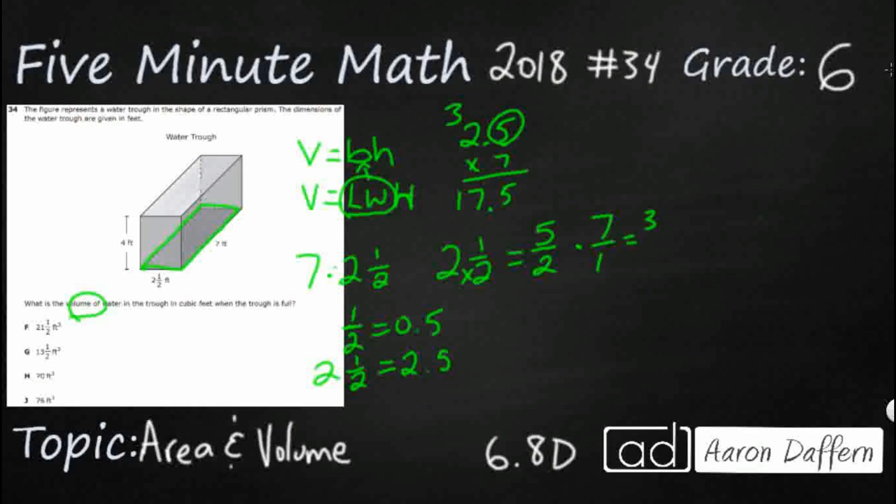You get 35 halves, but now that's an improper fraction. Now we're going to have to divide up, and you're going to get 17 and a half, or 17.5. So I think 17.5 in decimal is the easier way to do it.